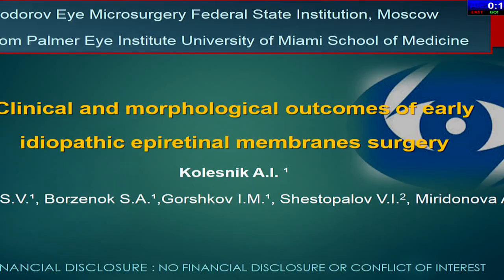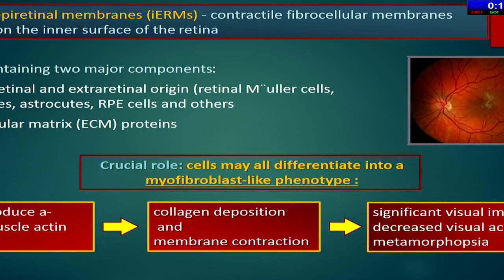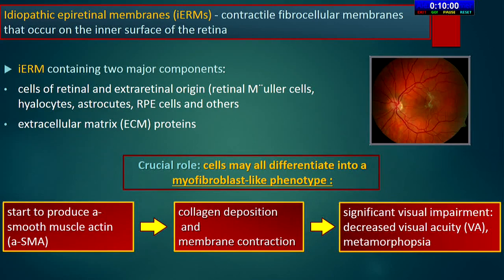Good afternoon. Idiopathic epiretinal membranes are contractile fibrovascular membranes that occur on the surface of the retina, causing tangential forces leading to a deformation of the retinal architecture and significant visual impairment.